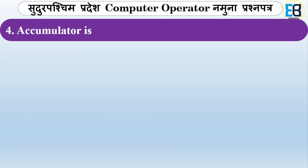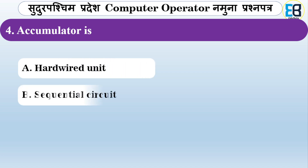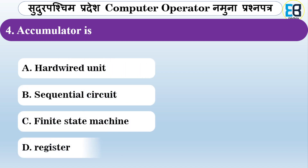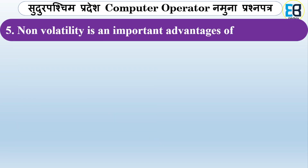What is an accumulator? Options include hardwired unit, sequential circuit, finite state machine, or register. The correct option is register — an accumulator is a type of register.